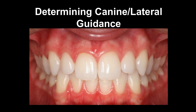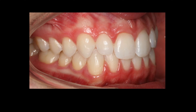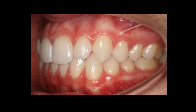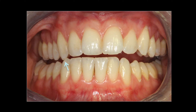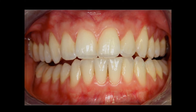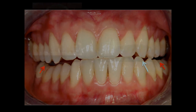When you have a nice Class I relationship like this, you can see on the right side and on the left side a fairly ideal canine relationship. It's fairly straightforward when you're trying to determine your lateral guidance. We need good canine guidance. When the patient moves into the right lateral and the cusp tips engage, the posterior teeth are disengaged. And when the patient moves into the left lateral, once again the cusp tips are engaged and the posteriors disengage.